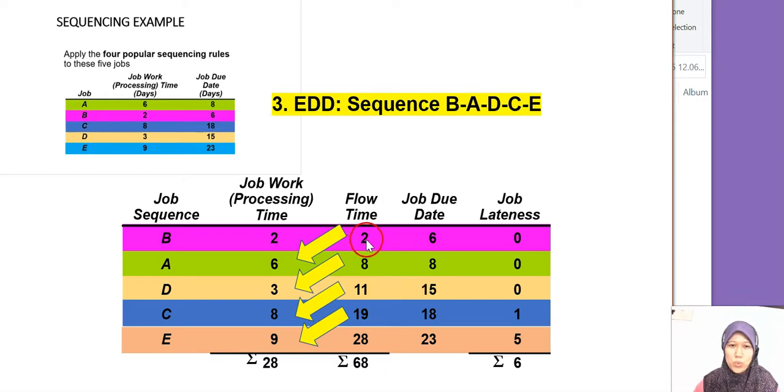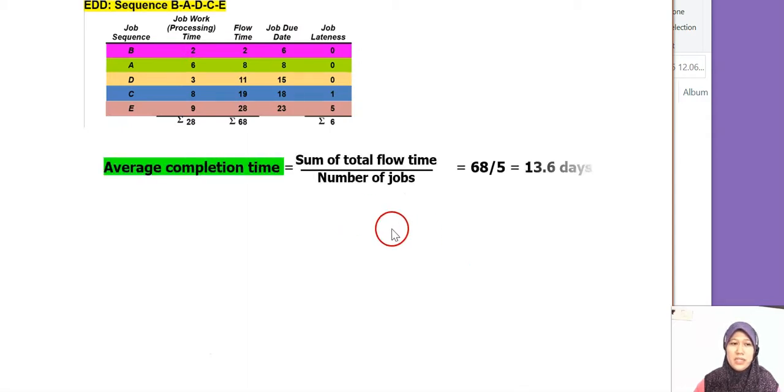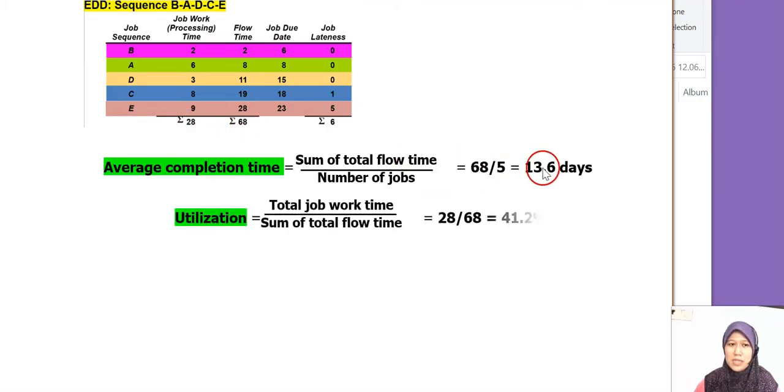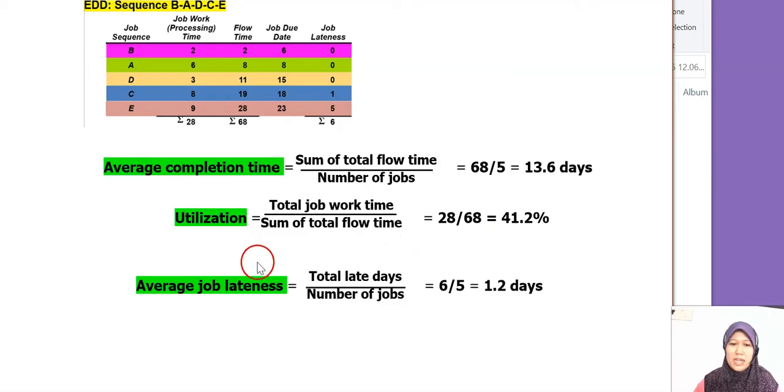Sum the processing time, sum of the flow time, and then we will check on the job lateness. The first one we finish at 2, due at 6, so no late. Finish at 8, due date 8, so on the dot, so we have no late. Finish at 11, due date on 15, so we're not late. Now we start to have late. Finish at 19, supposed to be due on 18, so we have one day late. And then finish at 28, due date on 23, so we're late 5 days. Sum up all the job lateness, we got 6. Now we're going to do the calculation. Average completion time, we take the sum of the flow time divided by 28, we got 13.6 days. Utilization, we have 28 divided by 68, we have 41.2%. And the lateness, we have total of 6 divided by 5 jobs, we have 1.2 days.